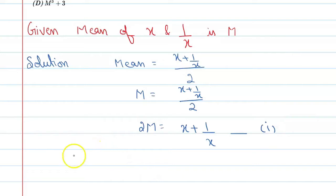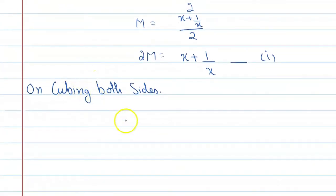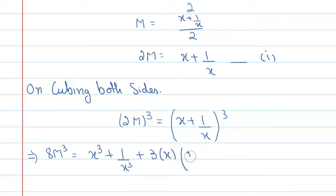Okay, now cubing on both sides. You can say on cubing both sides: 2M all raised to power 3 equal to x plus 1 by x all raised to power 3. So this will become 8M cubed equal to this will become x cubed plus 1 by x cubed plus 3 into x into 1 by x and the whole into x plus 1 by x.